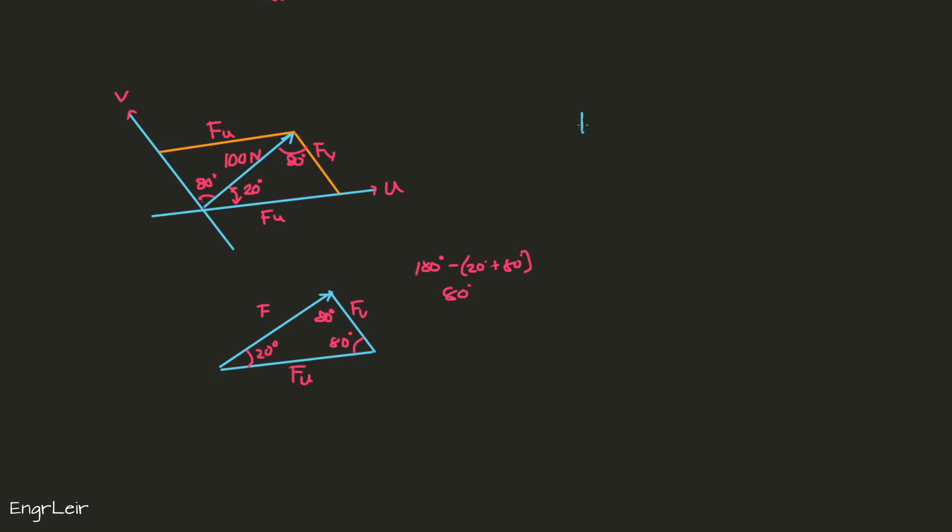We have f over sine of 80 degrees—f over the sine of this angle opposite f must be equal to f sub u over the sine of the angle opposite f sub u, which is 80 degrees also. Since f is 100 Newtons, solving for f sub u, we get f sub u is also 100 Newtons.